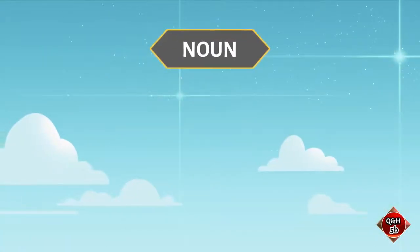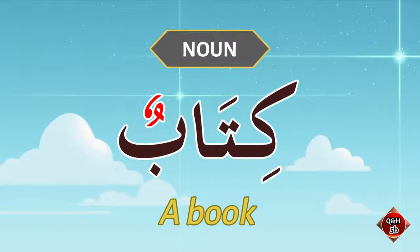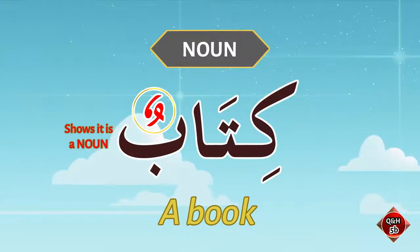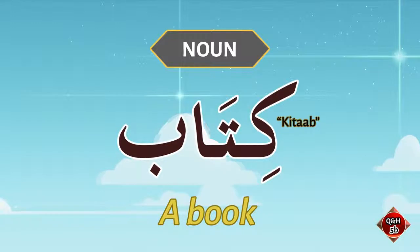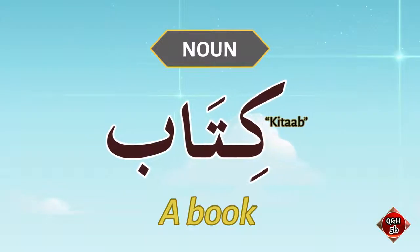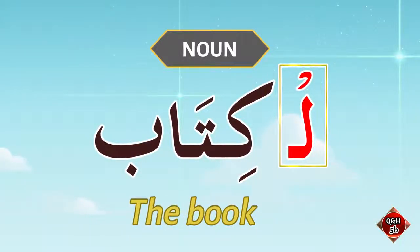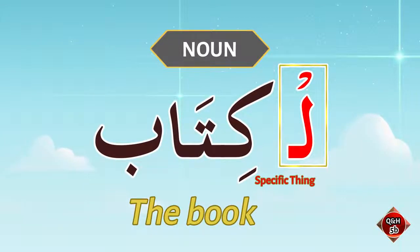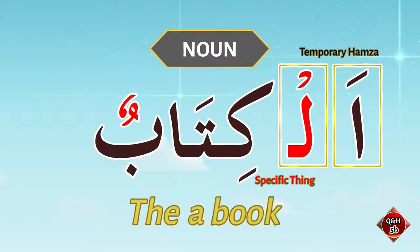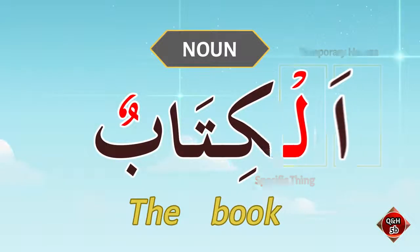Let's talk about signs for nouns. Kitabun means 'a book.' The 'un' at the ending shows that it is a noun. Even if you don't pronounce the ending and just say 'kitab,' it doesn't matter — it is still a book. But if you are talking of a specific thing, you add 'ul' in the beginning of the word. 'Ul' means 'the' — specific. In Arabic, you don't start with a saakina letter, so you have to add a temporary hamza and say 'al.' You have to drop the 'un.'